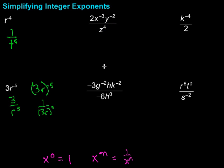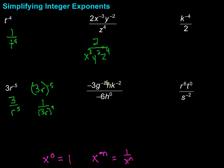Now let's look at this one: 2 times x to the negative third power times y to the negative second, over z to the fourth. The x is being taken to the negative third power, so that has to get flipped down. The y is being taken to the negative second, so that has to get flipped down too. What's left on top? Well, 2 is left on top because it's sitting there by itself. On the bottom we end up with x to the third, y squared, and z to the fourth. We can't simplify any further because we've got all different variables.